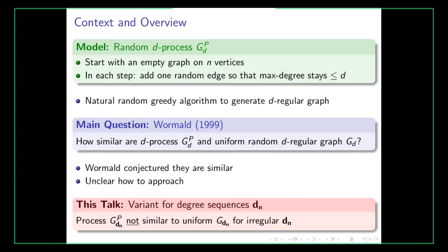In this project, what we consider is a variant of this process for arbitrary degree sequences. What we'll show is that the random graph we get from this random process — which we'll call GP(DN) — is not similar to the uniform random graph with the specific degree sequence DN, which we'll call G(DN). And it is not similar when the degree sequence is irregular.